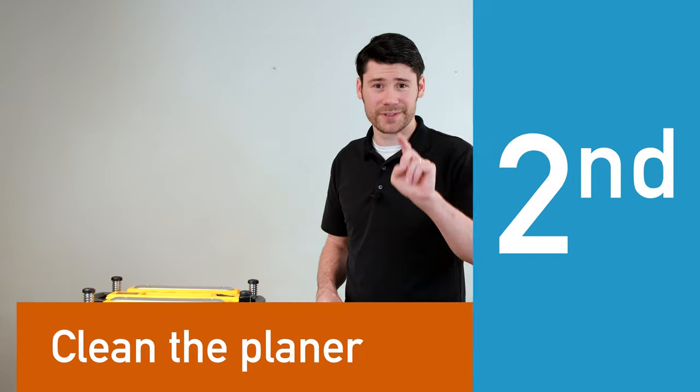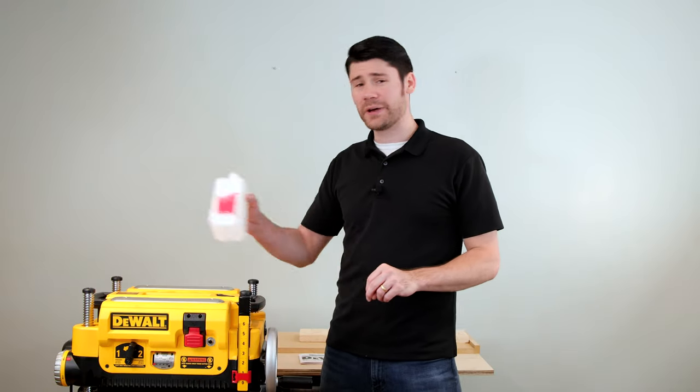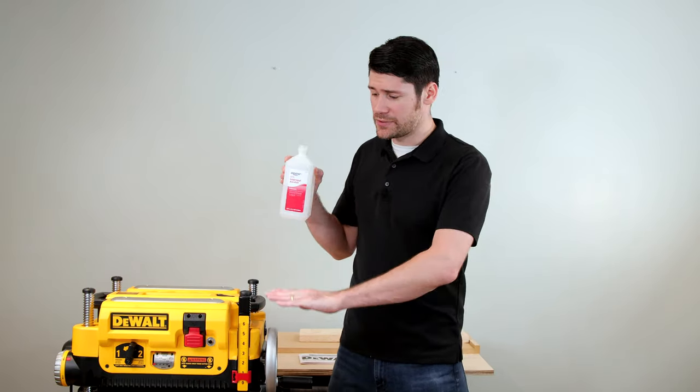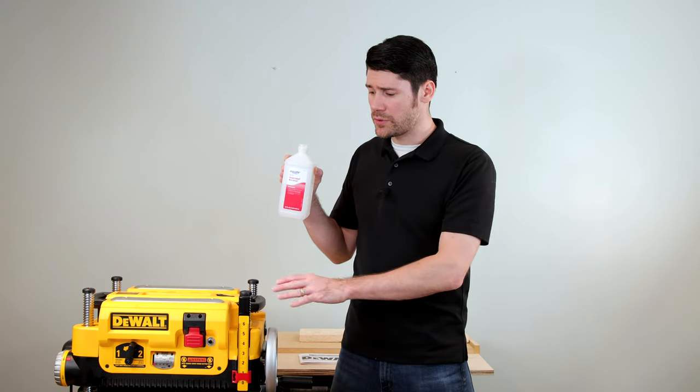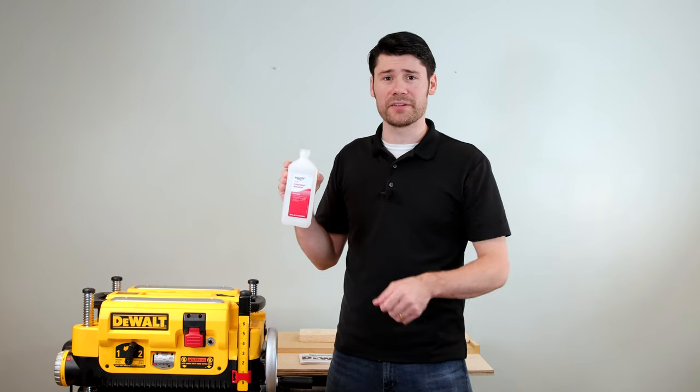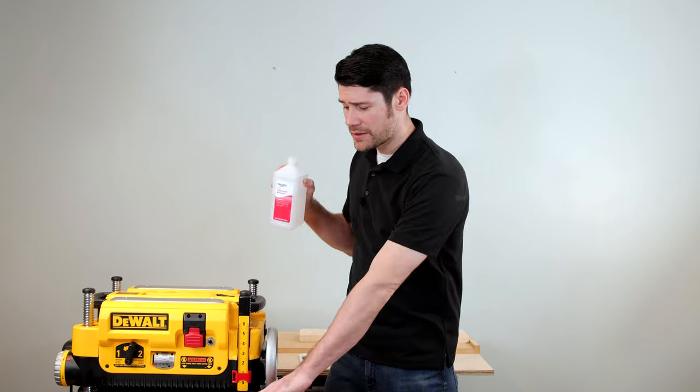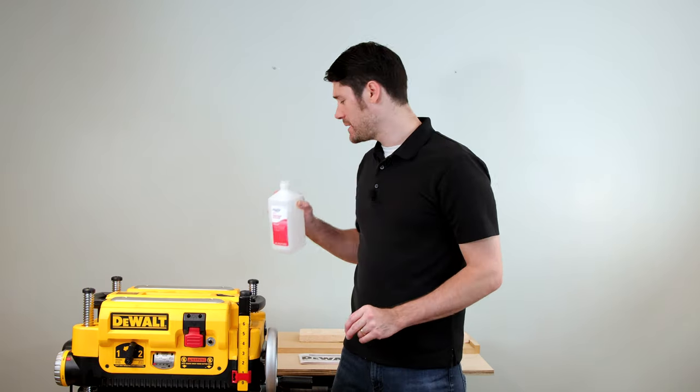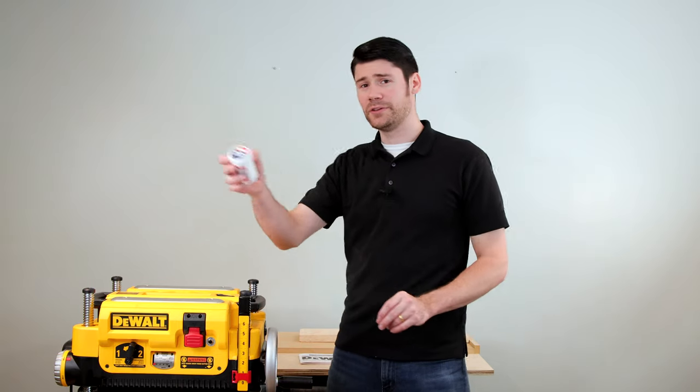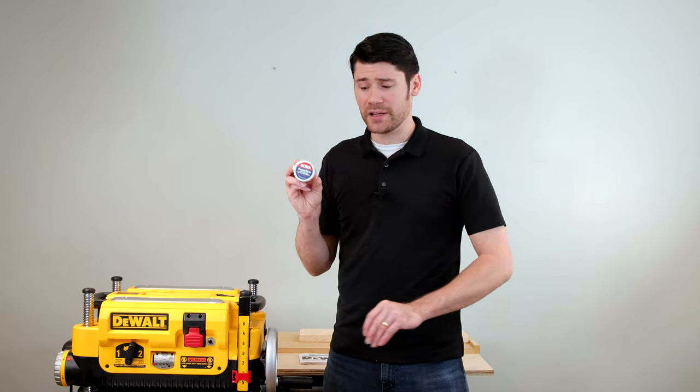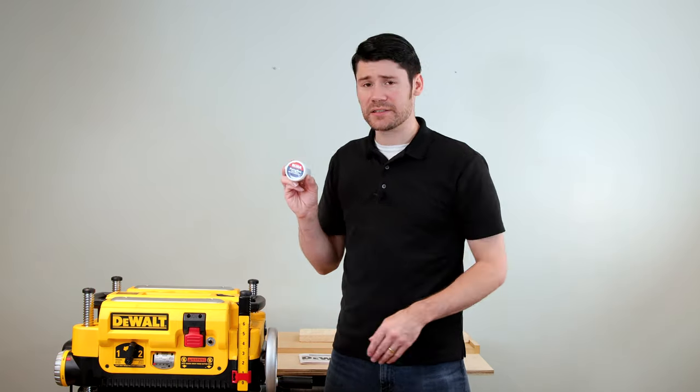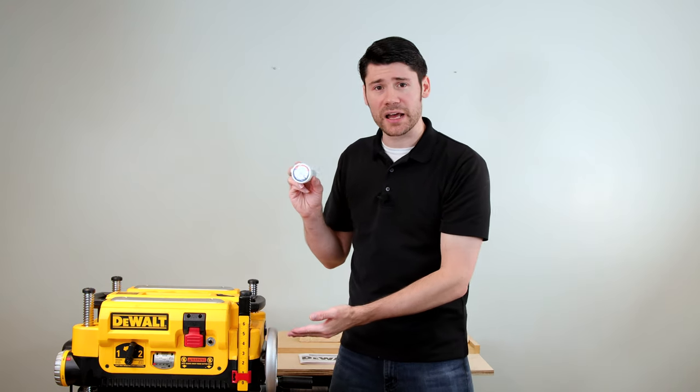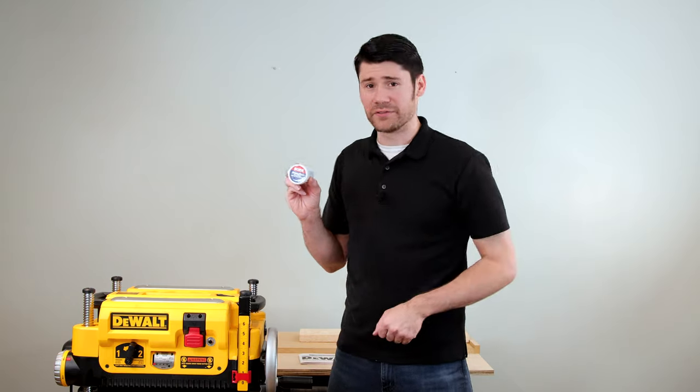Number two, clean your new planer. Go ahead and get some 91% isopropyl alcohol and use that to remove any debris or packing grease or anything like that from the factory from the bed on your planer. You'll want to remove that to clean it up and then use a nice tool wax to get the surface nice and smooth and very slick. You want the work pieces to just glide across the surface of your planer.